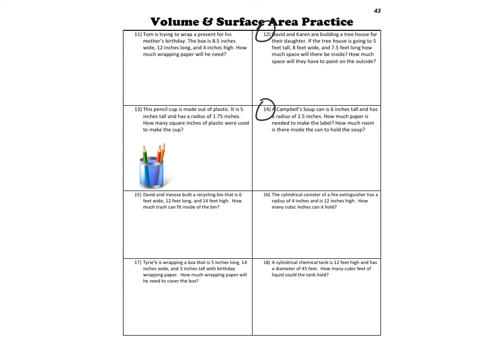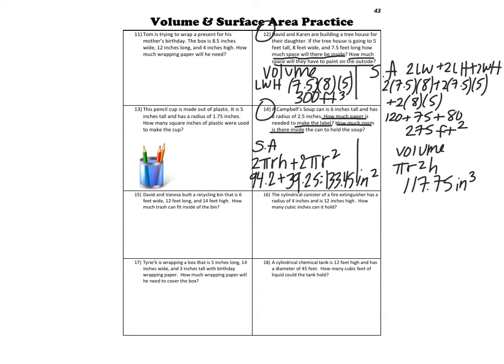All right, so let's look on page 43. Why don't you guys try numbers 12 and 14 and then check yourself with me. All right, so go ahead and check yourself. So on number 12, Dave and Karen are building a tree house for their daughter. The tree house is going to be 5 feet tall, 8 feet wide, and 7.5 feet long. How much space will there be on the inside? That tells me to find the volume and I got 300 feet cubed. How much space will they have to paint on the outside? So you're painting the outside to find the surface area to get 275 feet squared. 14, a Campbell's soup can is six inches tall and has a radius of two and a half inches. How much paper is needed to make the label? So that's going to be the surface area on the outside. How much room is there inside the can to hold the soup? So you're finding the volume for that.